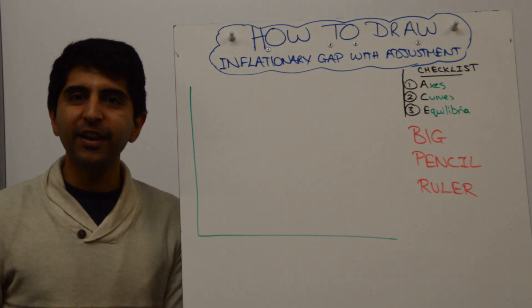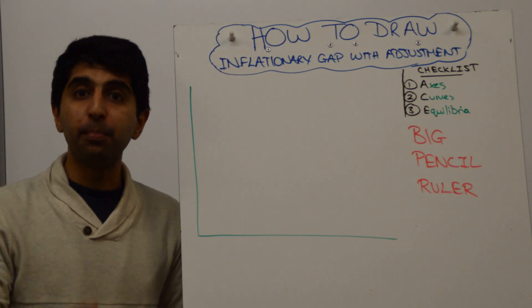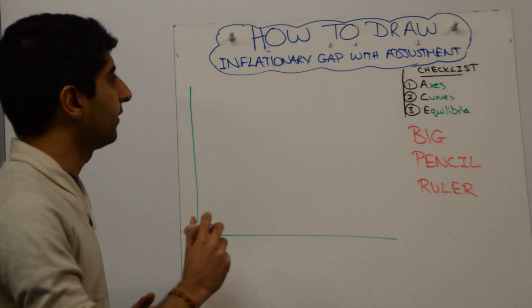Hi everybody! We want to now show an inflationary gap in the classical model, but with the adjustment. How do we construct this diagram?